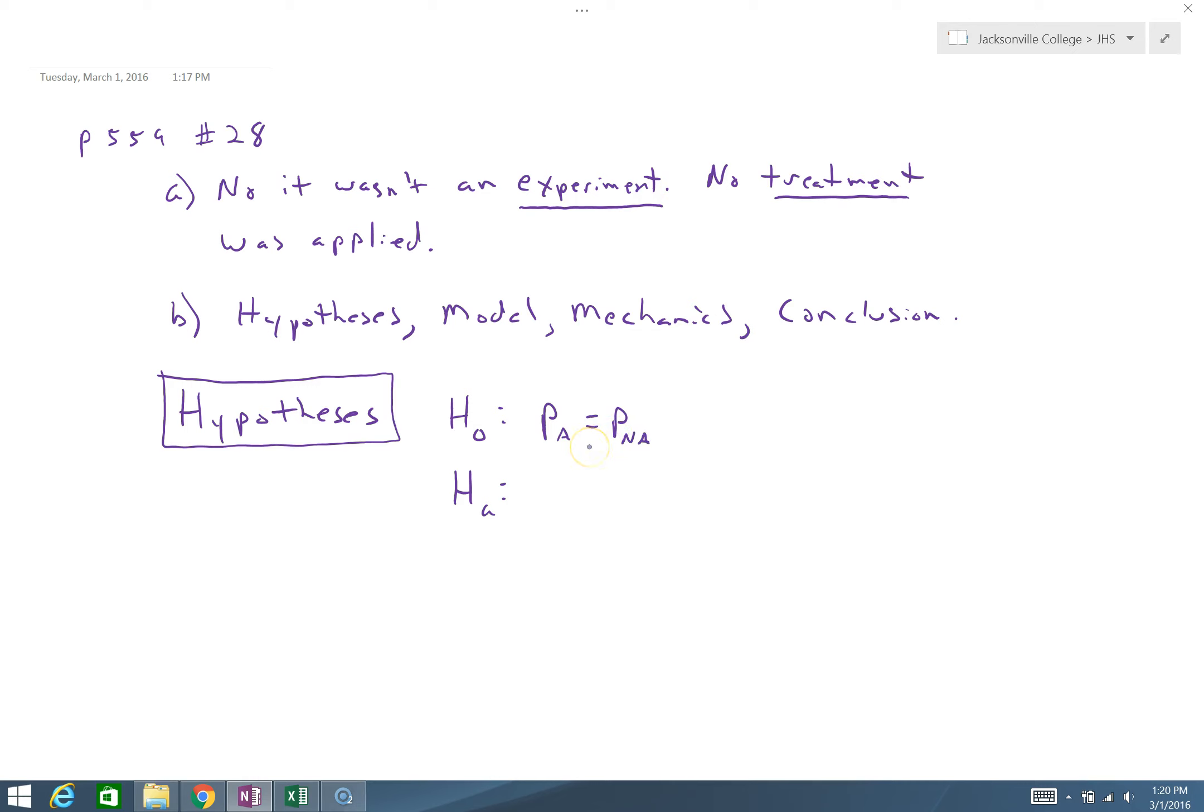That's our null hypothesis. Our alternative is one is going to be greater than, less than, or not equal to the other. The question says a higher proportion of low birth rates. So what we're trying to show is, is this group greater than this group? Where P is the proportion of low birth weight babies.